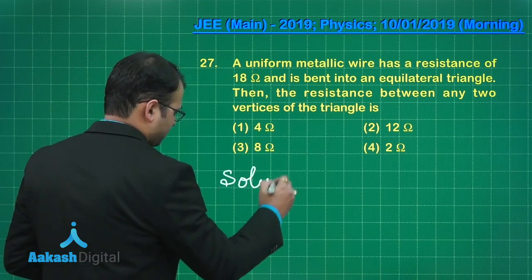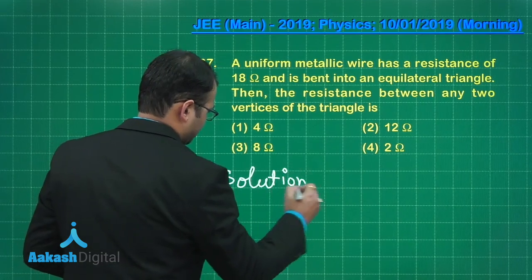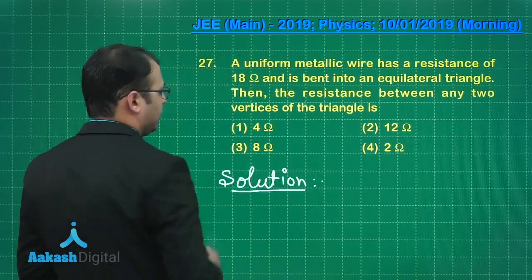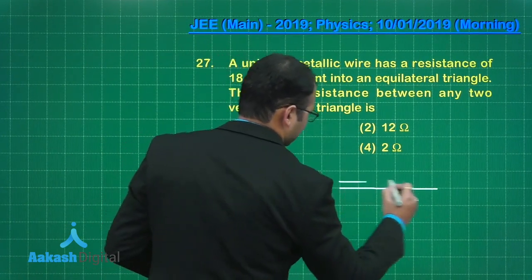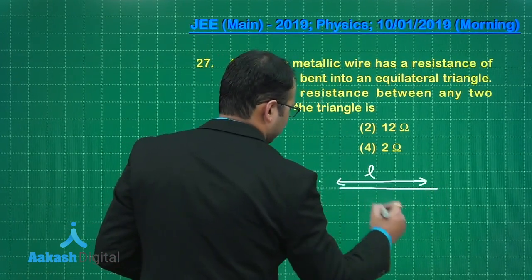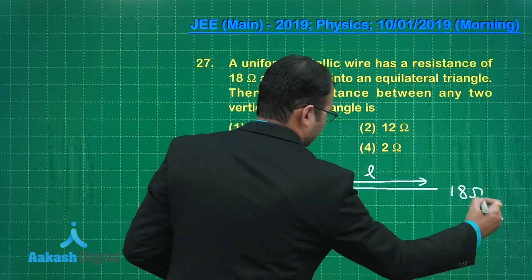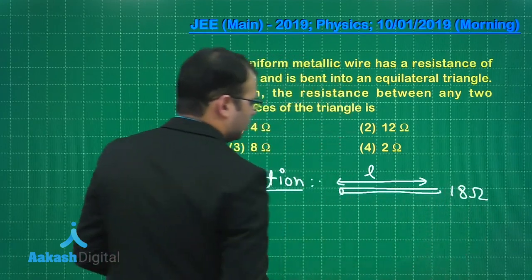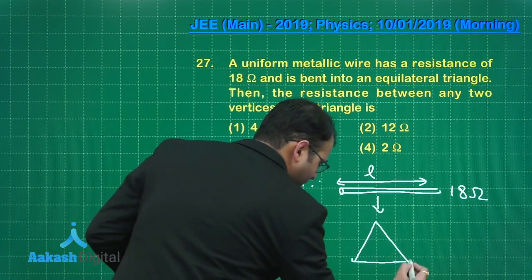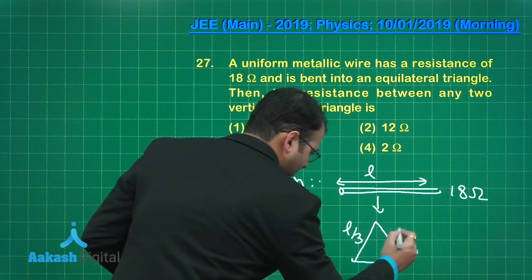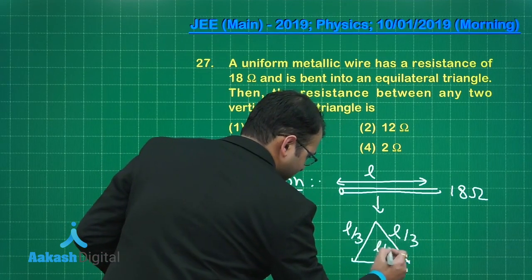In here, this was the wire of resistance, or let's say length was L and resistance was 18 ohm. Now this was converted into a triangle. So every side was of L by 3.